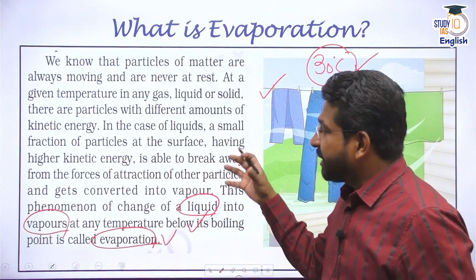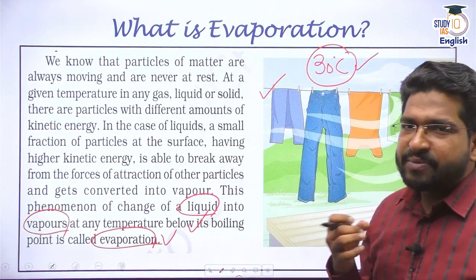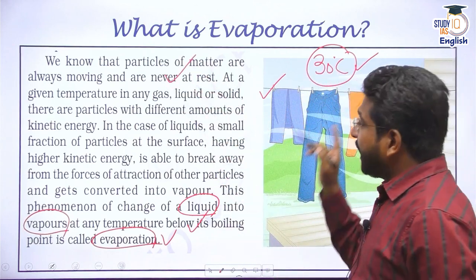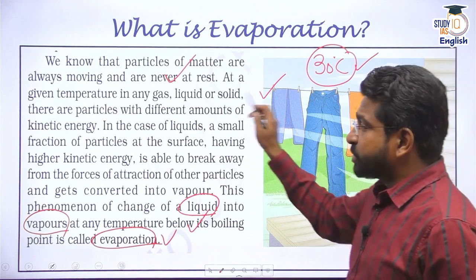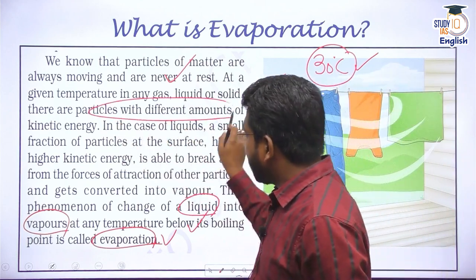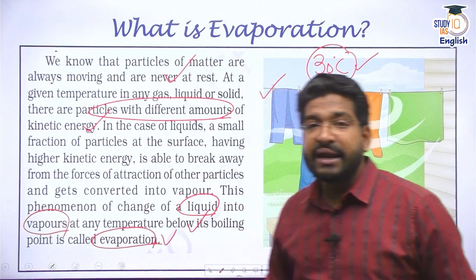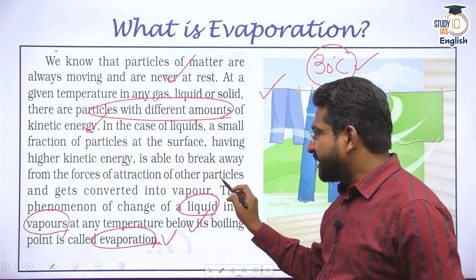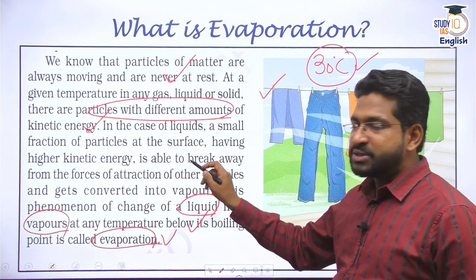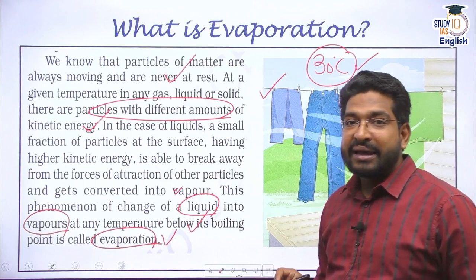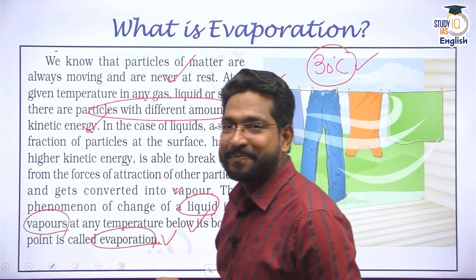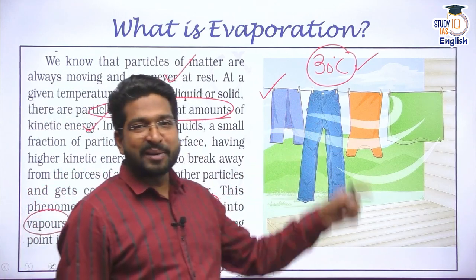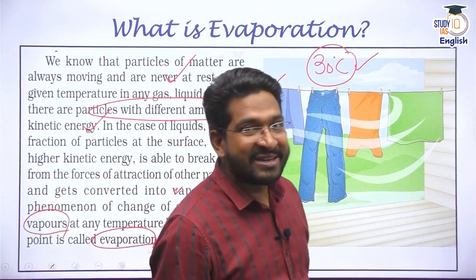How is evaporation occurring? The particles of matter continuously keep on moving and are never at rest. At any given temperature, in any gas, liquid, or solid, the particles have different amounts of kinetic energy. Because of this kinetic energy, even at 30°C, the particles of liquid slowly get converted into vapour and evaporate. This proves that particles are constantly in motion at whatever temperature — and that is why we see drying of clothes very easily.